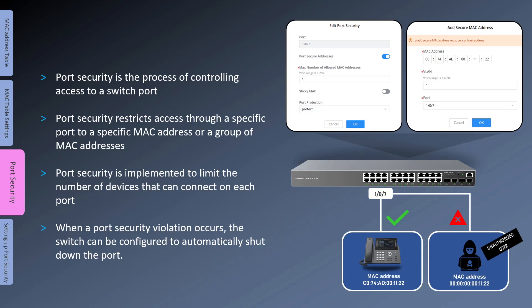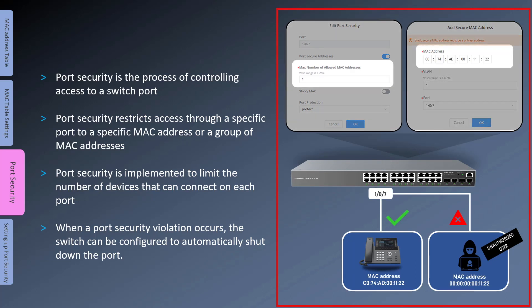The administrator can explicitly define the MAC addresses of the devices that are allowed to use a switch interface. If an unauthorized device tries to connect, the switch can be configured to discard the traffic from the unauthorized user and simply shut down the interface. In this example, Gigabit port 7 is configured with a secure MAC address, which is the MAC address of the IP phone, and access is limited to only one MAC address. When an unauthorized user tries to connect to port 7, the switch will discard the traffic or shut down the interface depending on the applied protective action.